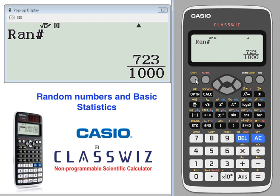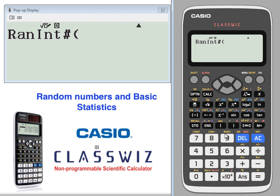Or you can use random integers, where you can determine what the starting value is and what the ending value is. We want to generate numbers between 1 and 10. Every time you press equals, you get a new value.